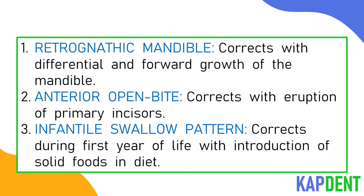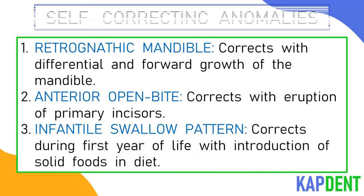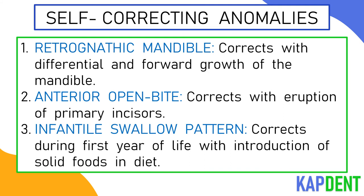Now let's look at the self-correcting anomalies seen in the pre-dentate period. The retrognathic mandible corrects with differential and forward growth. The anterior open bite corrects with the eruption of primary incisors. And the infantile swallow pattern corrects during the first year of life with the introduction of solid foods and diet.